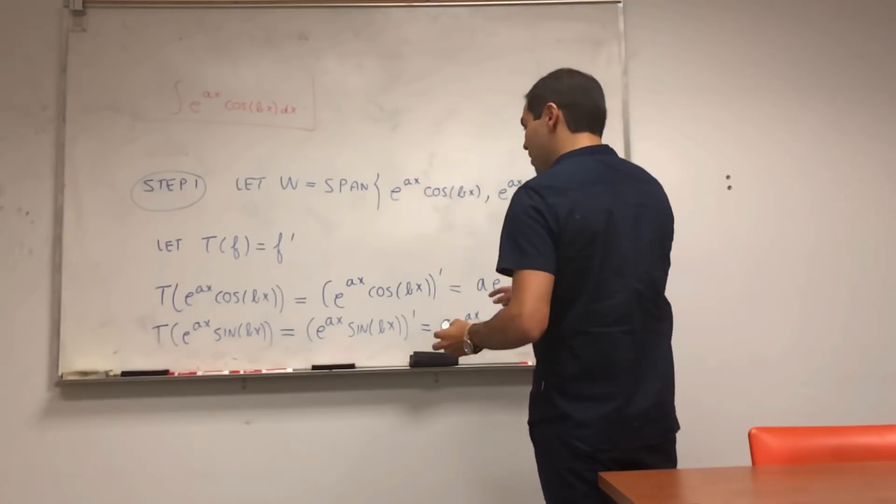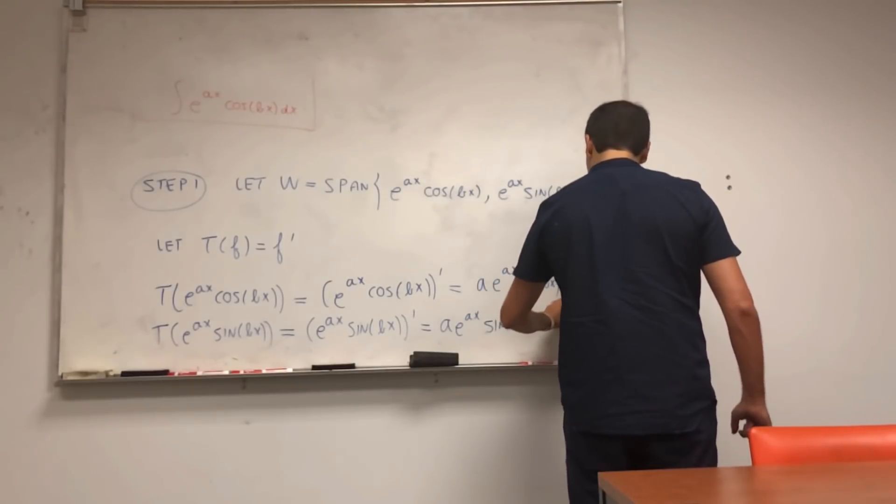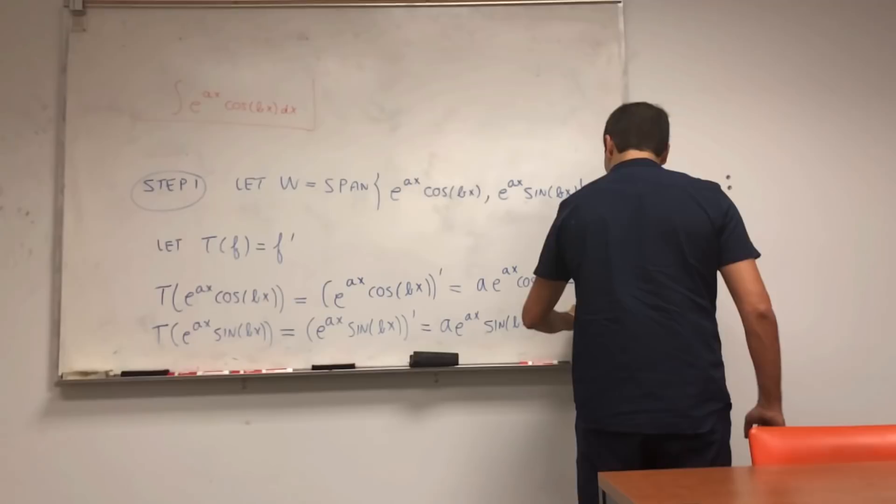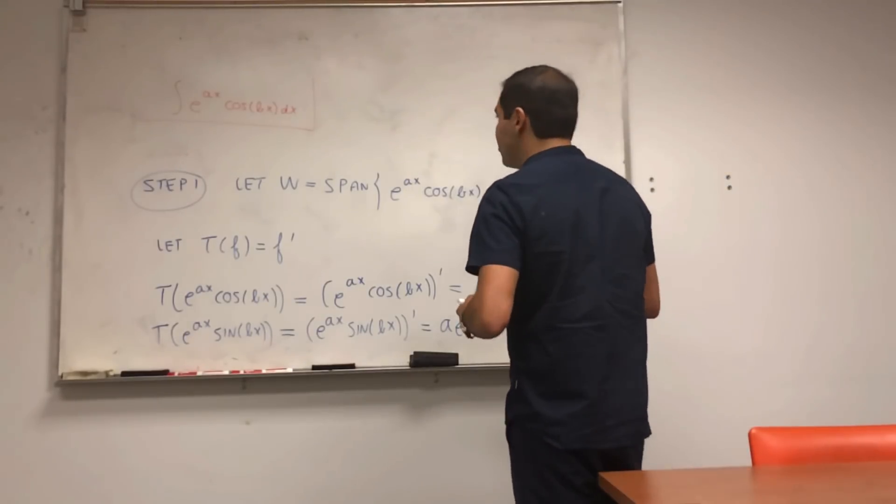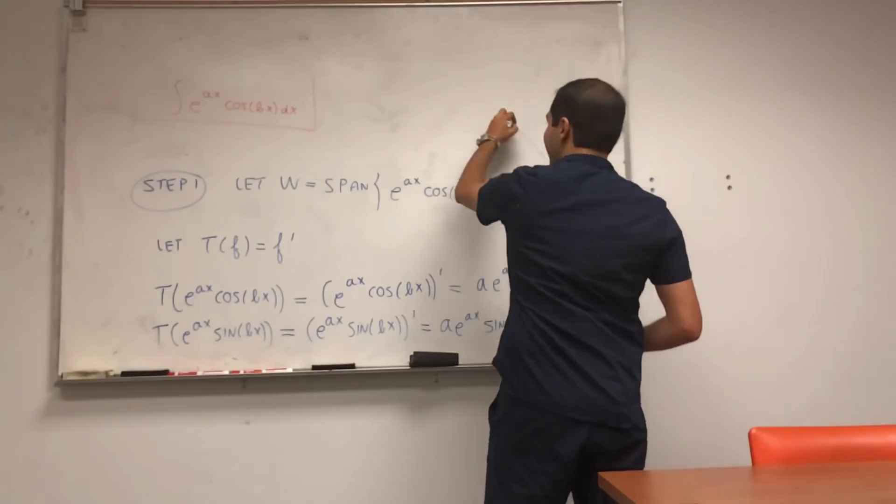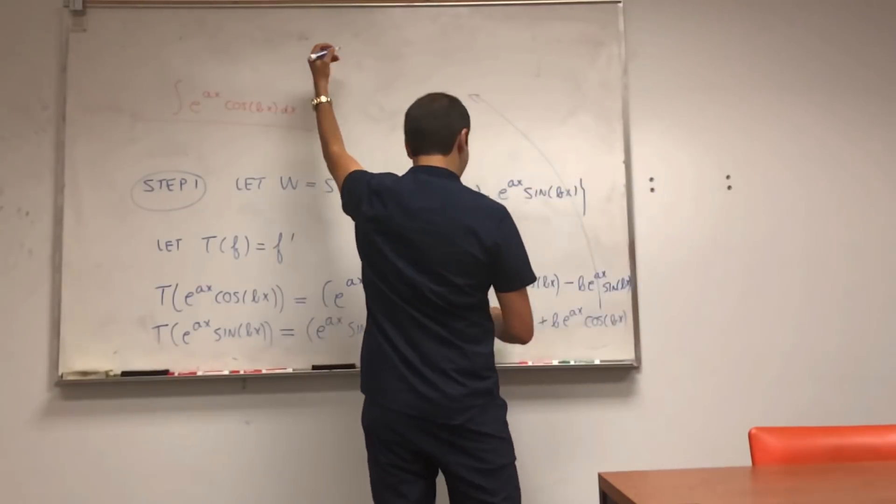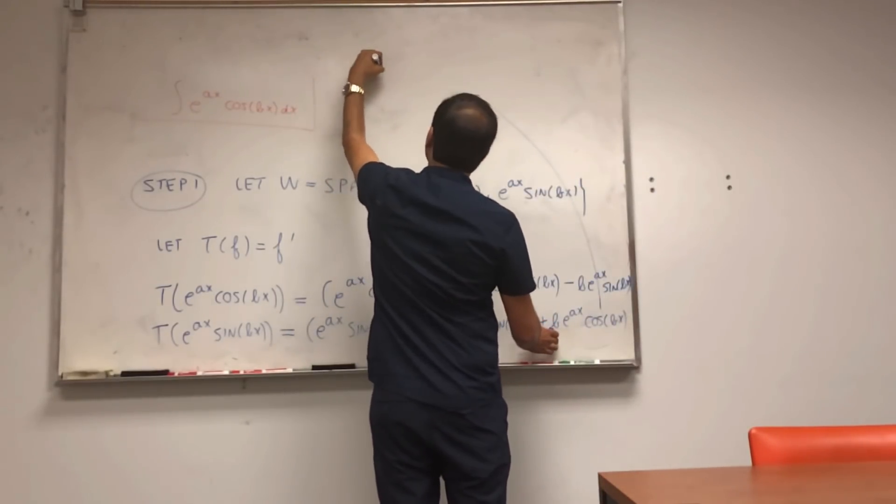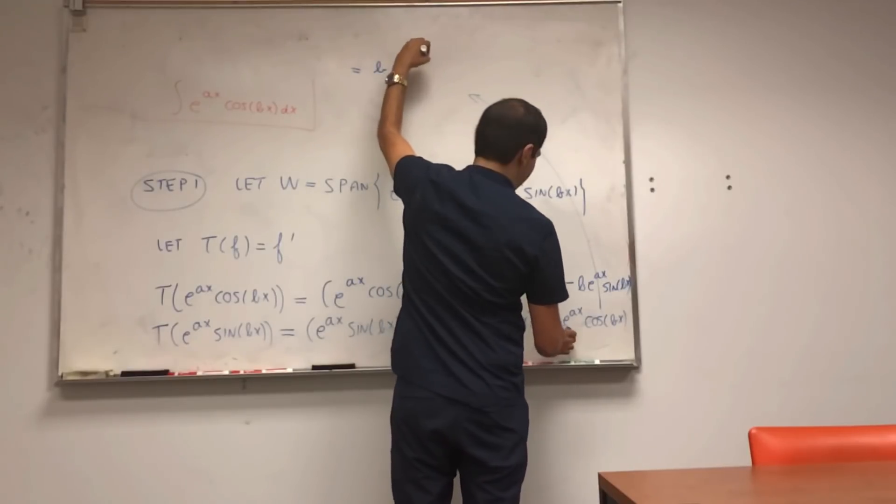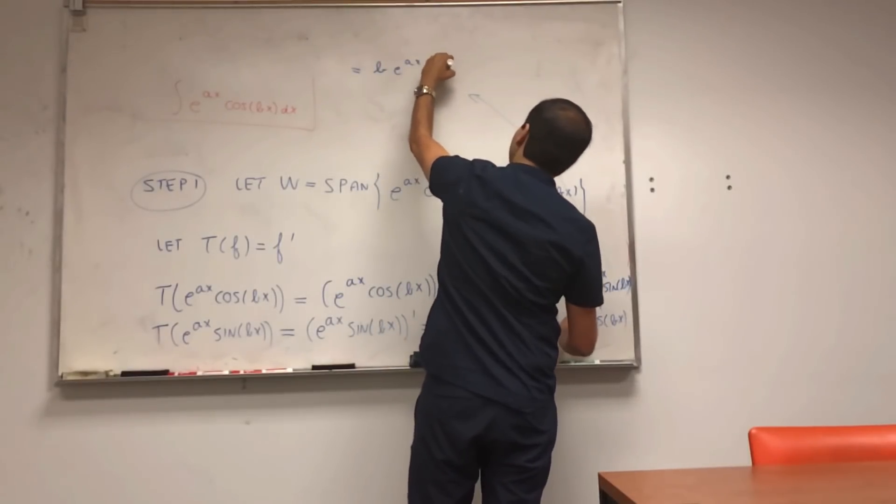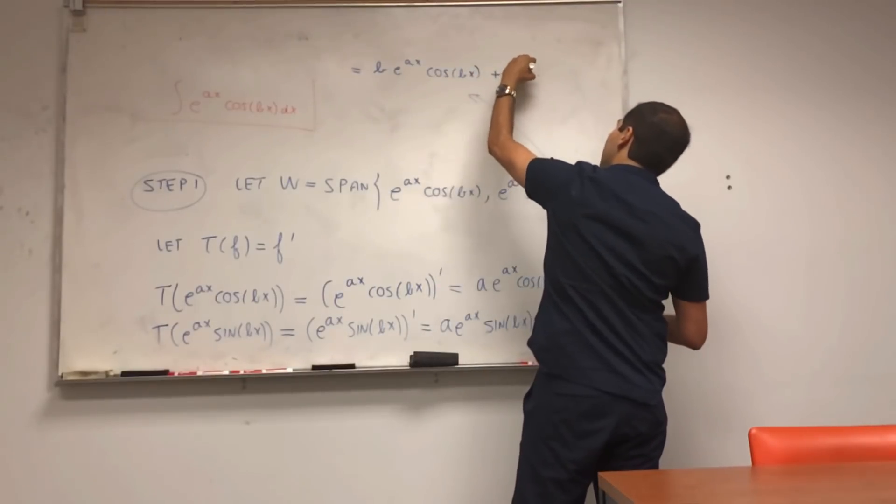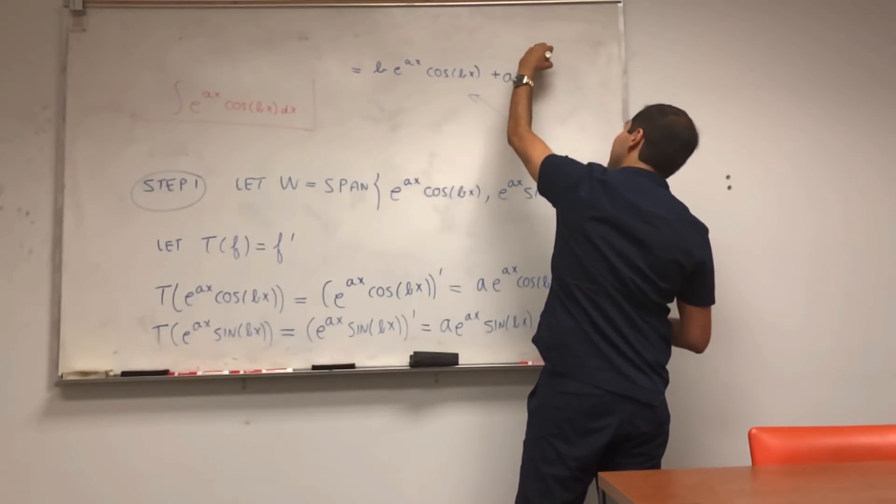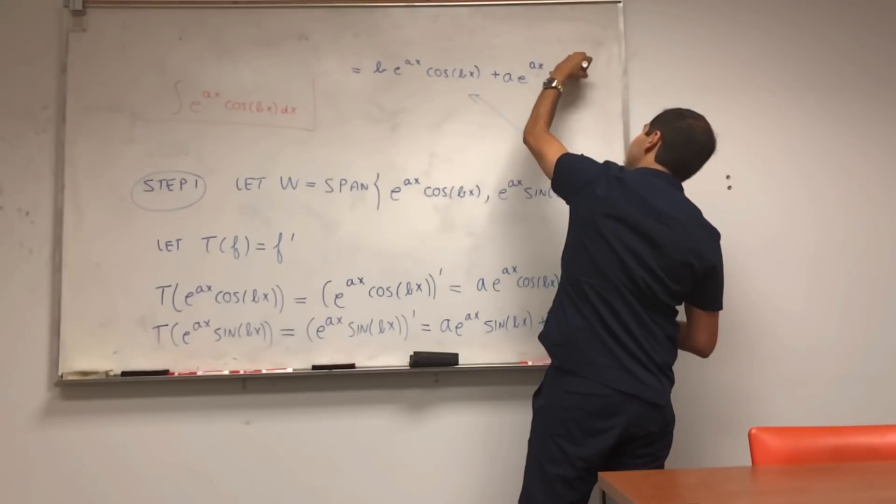Plus b e to the ax cosine of bx. Let me just rewrite this because we want to find a matrix. That's b e to the ax cosine of bx plus a e to the ax sine of bx.